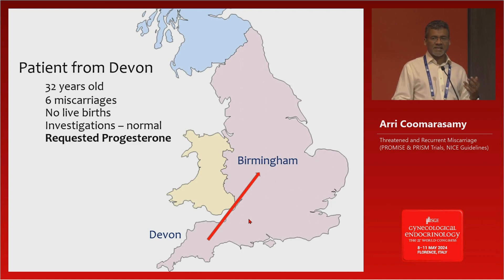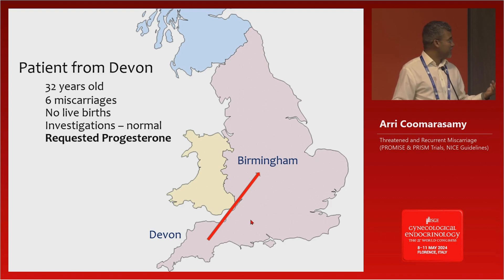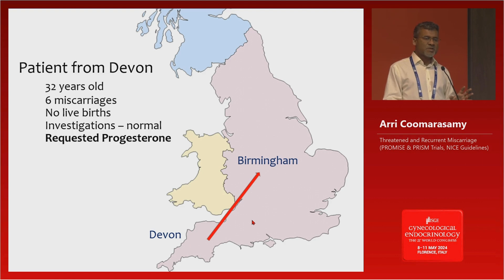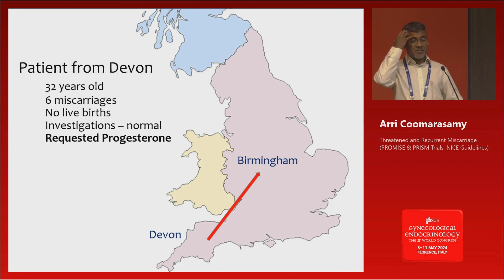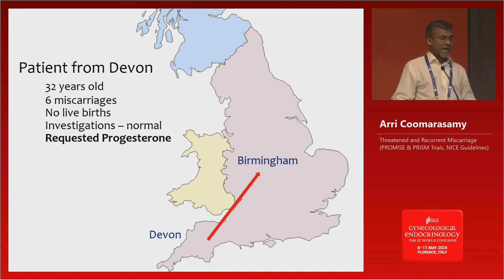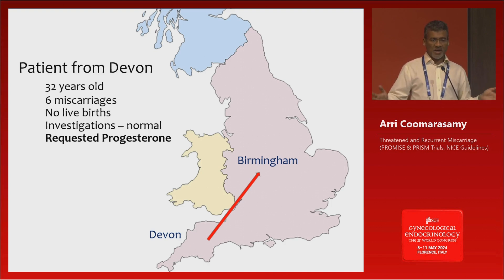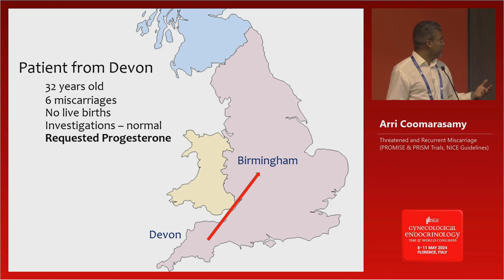I think doing clinical practice is of value when you interpret findings. We run a recurrent miscarriage clinic in Birmingham as part of the Tommy's Centre. A patient came all the way from Devon — she'd had six miscarriages and no live birth, she was young, had been investigated and everything was normal. She said, 'My sister had progesterone, doctor, and she's got a baby — would you give me progesterone?' I said, we've completed the largest trial on this subject and the findings were negative, so perhaps there isn't any value in giving this to you. She accepted that and was leaving the clinic.